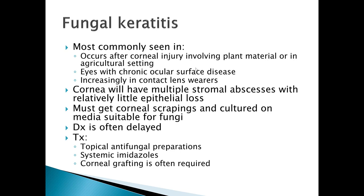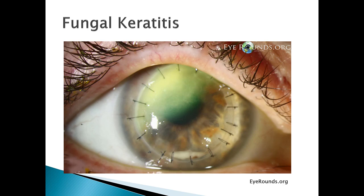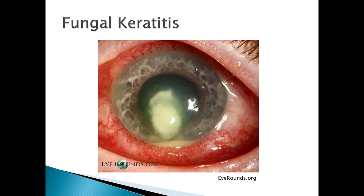If you have somebody you treat for bacterial keratitis who is not getting better — especially with a history of working around plant material in an agricultural setting — you have to start thinking about fungal keratitis. An ophthalmologist will need to do corneal scraping to get the diagnosis. Treatment is topical antifungal preparations, and you may need systemic antifungals. If there is extensive corneal damage, corneal grafting may be needed. Here's an example of fungal keratitis — it has a feathery, fluffy cloud appearance.